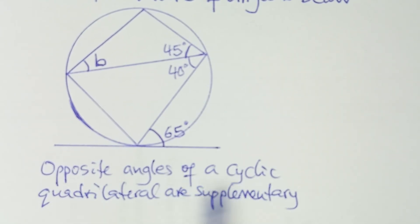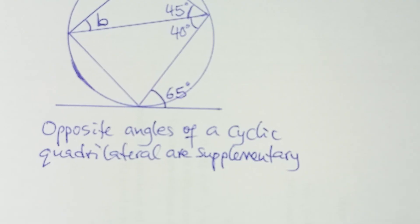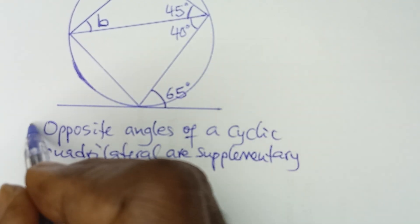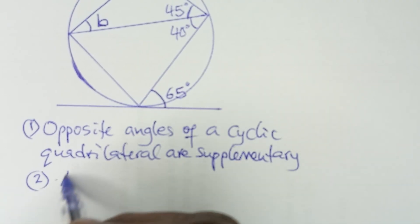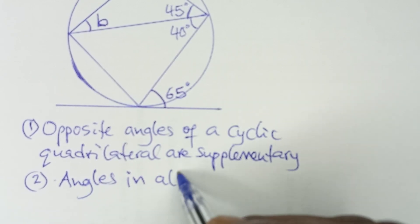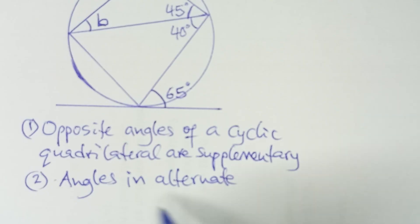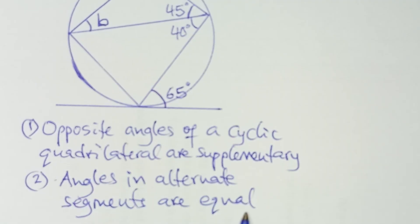The second theorem that we are going to apply to solve this problem — let me number this as theorem one and write theorem two — is that angles in alternate segments are equal. This is the second theorem we are going to be applying.